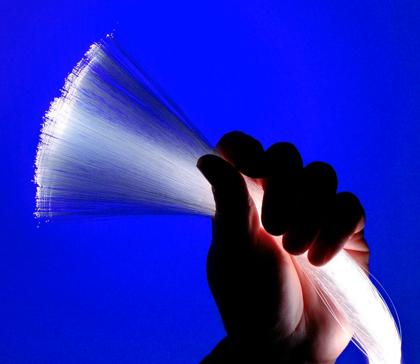Attenuation in fiber optics, also known as transmission loss, is the reduction in intensity of the light beam as it travels through the transmission medium. Attenuation coefficients in fiber optics usually use units of dB per kilometer through the medium due to the relatively high quality of transparency of modern optical transmission media. The medium is usually a fiber of silica glass that confines the incident light beam to the inside. Attenuation is an important factor limiting the transmission of a digital signal across large distances. Thus, much research has gone into both limiting the attenuation and maximizing the amplification of the optical signal. Empirical research has shown that attenuation in optical fiber is caused primarily by both scattering and absorption.